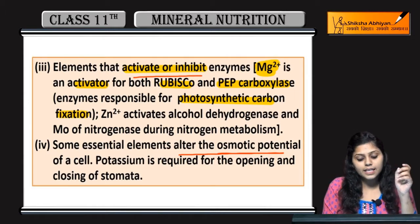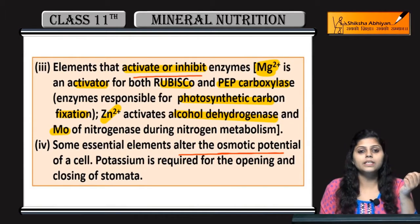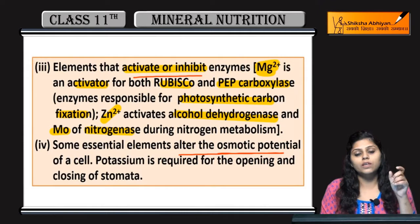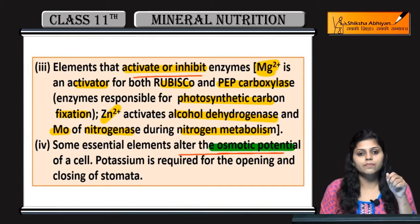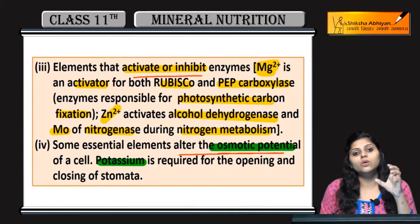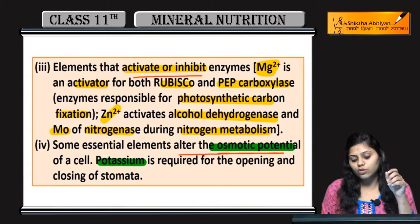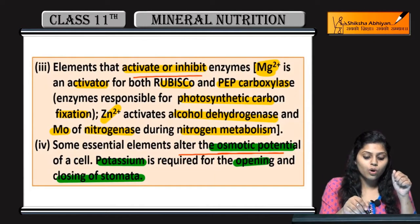Similarly, zinc and iron activate alcohol dehydrogenase. Molybdenum is a component of nitrogenase and is involved in nitrogen metabolism. The fourth category includes elements that alter osmotic potential, such as potassium, which is required for the opening and closing of stomata.